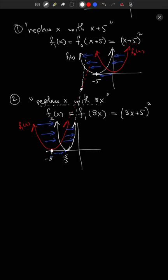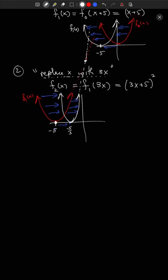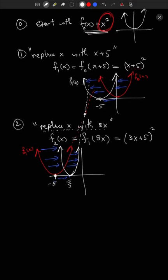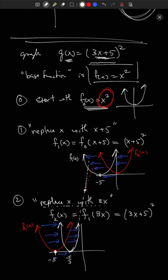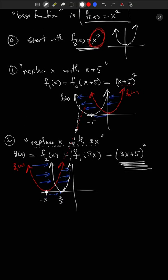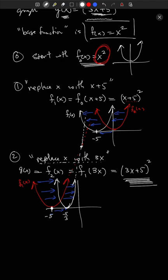The final graph is the graph of g(x) = (3x+5)². You do these modifications one after the other, graphing them step by step, until at the last step you hit the function you actually wanted. The graph at the last step is the graph you're looking for.